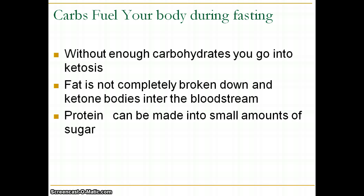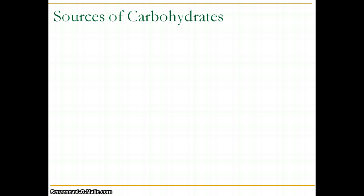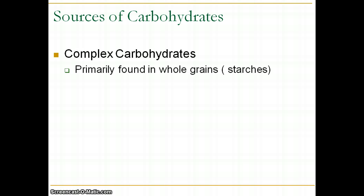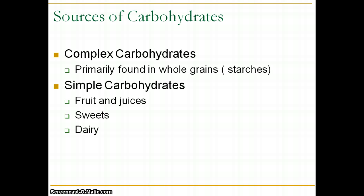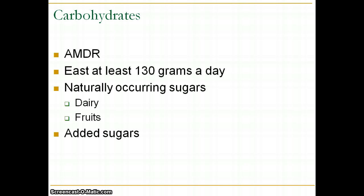Read up on how carbs fuel your body during fasting, and how without carbohydrates you go into ketosis — fat is not completely broken down, and ketone bodies enter the bloodstream. Good sources of carbohydrates are primarily complex carbohydrates found in whole grains. For simple carbohydrates, look to fruits, juices, sweet-tasting foods, and dairy. The AMDR for carbohydrates is 45% to 65% of your calories, or at least 130 grams per day — that minimum is just for your brain and central nervous system.